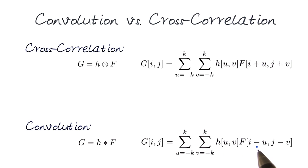You will notice the big difference here. This one, the index i minus u, j minus v. While here, we're adding it, plus u and j plus v.